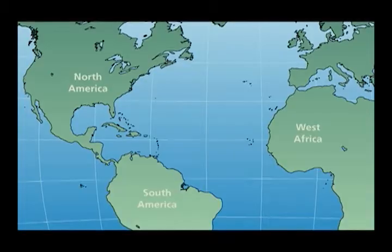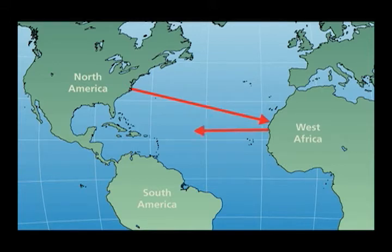That rum then became a very important trade good on ships that would sail to Africa to acquire new cargoes of enslaved Africans. So over the course of the 18th century you ended up with this triangular traffic in which ships from New England laden with rum would acquire cargoes of African captives, carry them to the Caribbean to produce more sugar and molasses, to produce more rum, to produce more captives.